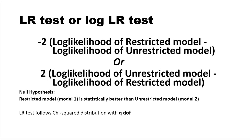Alternatively, the formula can be written as 2 times the log likelihood of the unrestricted model minus the log likelihood of the restricted model. Both expressions are the same. Under the null hypothesis that the restricted model is better, the LR test statistic follows a chi-square distribution with q degrees of freedom.